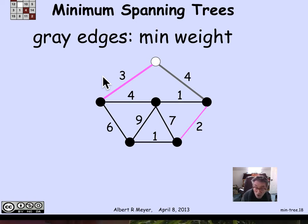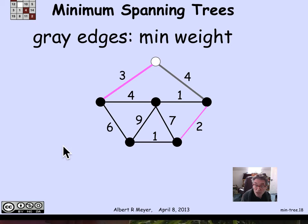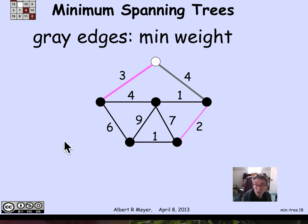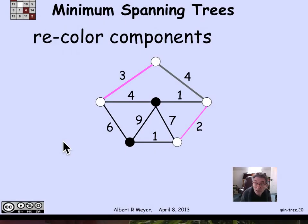Now I have four components: one defined by this edge, another connected component defined by that edge, and two still-isolated vertices. The rule is to recolor so that all vertices within each component share the same color. I could switch this component from black to white — I will. The isolated ones can be colored arbitrarily. Now this component is all white, that component is all white, and these two separate isolated components are both black.